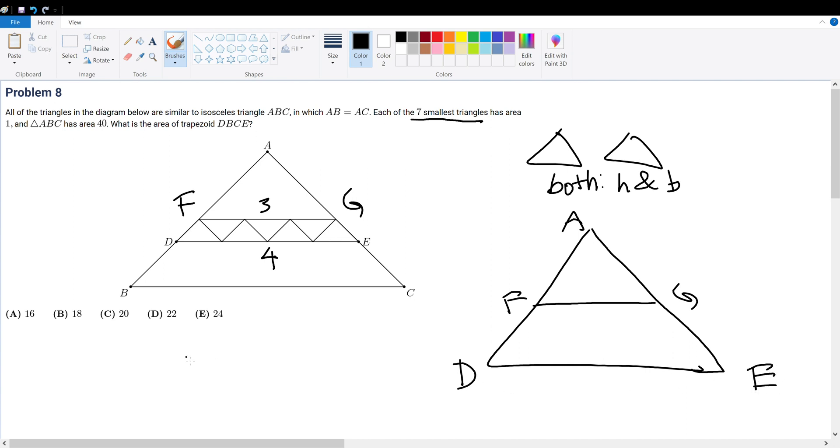The area of AFG over the area of ADE is equal to 3 over 4 squared. Now, how do I know this? Because a basic geometry postulate states that the comparison of two similar sides squared will give the comparison of the two similar shapes' area.